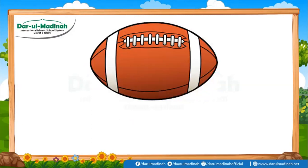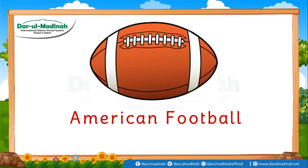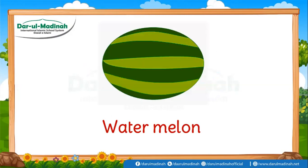Wow, here is a beautiful ball. This is like ellipse — this is an American football, its shape is also an ellipse. Wow, here is a sweet watermelon. It is also like an ellipse. This is an ellipse, its shape is also an ellipse.